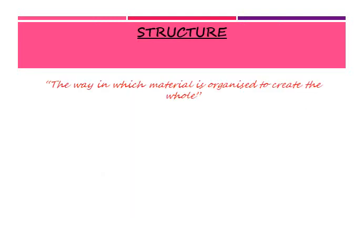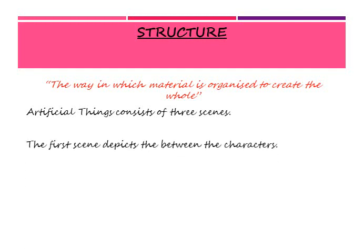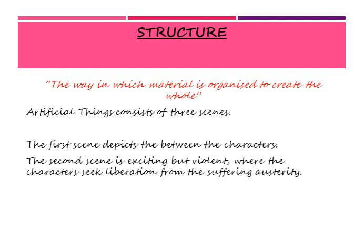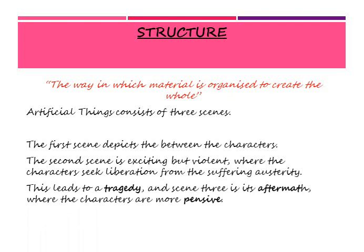Next we're moving on to the structure of the dance. Structure means the way in which material is organized to create the whole piece. Artificial Things consists of three different scenes. The first scene is between the characters in the wheelchairs. The second scene is exciting but violent, where the characters seek liberation from suffering. This leads to a tragedy, and scene three is the aftermath where the characters are more pensive.